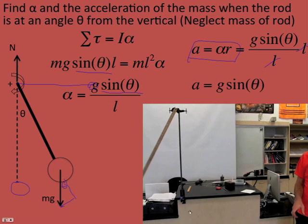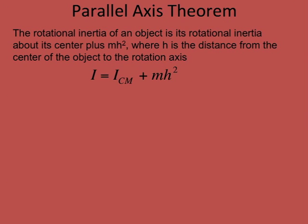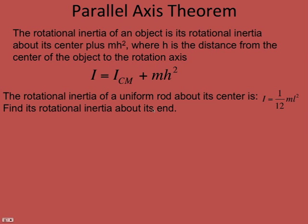One thing to watch: if they ask how fast it's going at the bottom, you would not use accelerations and kinematics equations for that — you want to use energy. But we're just looking at Newton's laws solving for acceleration. Let's do a quick review of the parallel axis theorem, which we'll need for the next problem. The rotational inertia of an object is its rotational inertia about the center of mass plus a correction term mh², where h is the distance from the center of the object to the rotation axis.